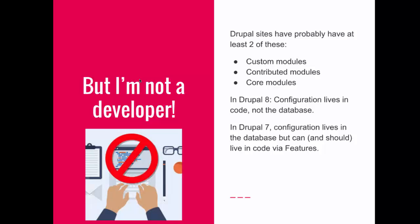But if you're not a developer, why do you care about this? Drupal sites all probably have at least two of the following: core modules — that's what you get when you install Drupal; contributed modules, like Views, which somebody created and we downloaded from the Drupal website; and some of us have custom modules that we either wrote ourselves or hired developers to write. For project managers, you should absolutely be asking your developers if they use Git or another version control system like Subversion, because it benefits you in the long run as well as the developer.